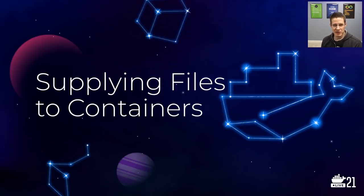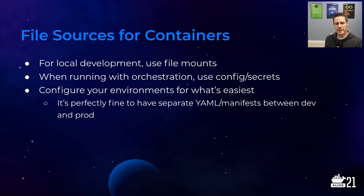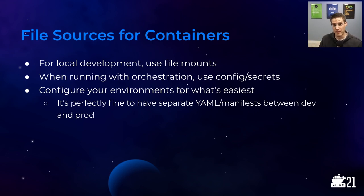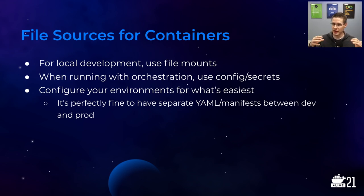So how do you actually get files into containers? For local development, just use file mounts — Docker run with -v for volume, or Docker Compose. When running with orchestration — whether Kubernetes, Swarm, ECS, or whatever — you can use configs and secrets, which make it easy to provide configuration and mount it. We'll see examples of that here in just a minute.